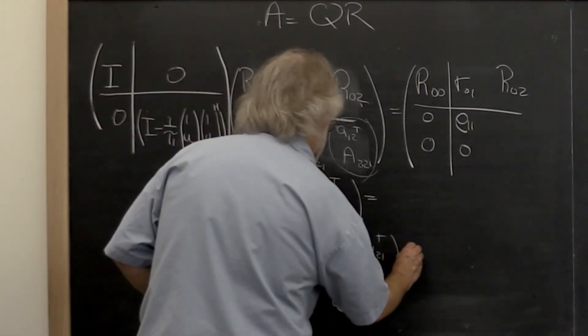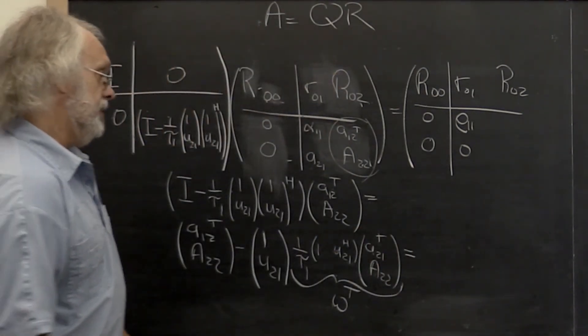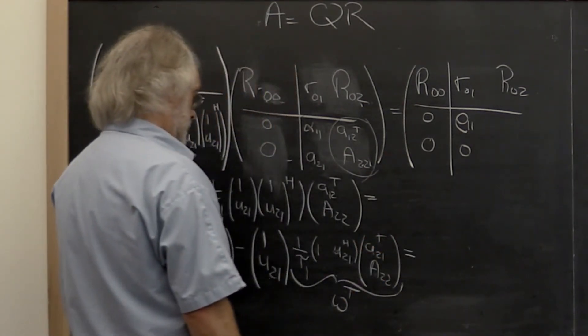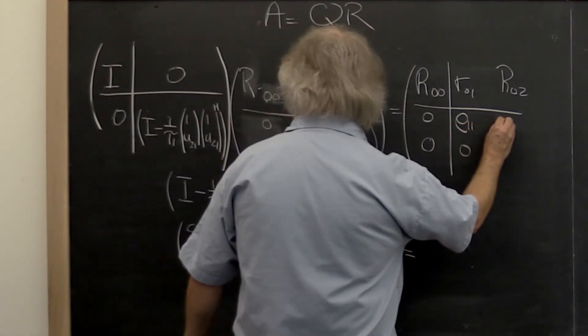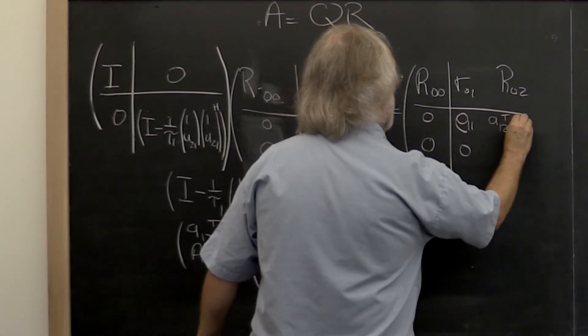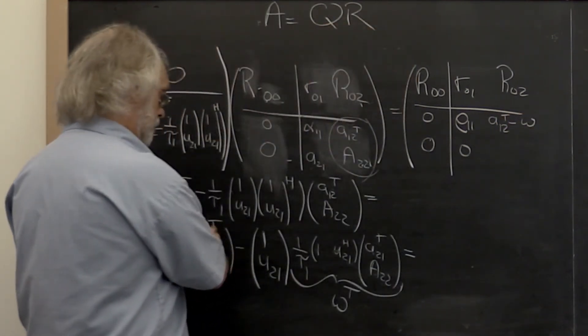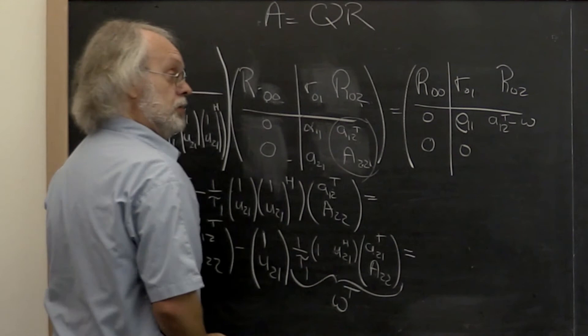And if you work this out, then the result of this is, we can write that in right here, it's a12 transpose minus w. That's this minus 1 times w transpose.